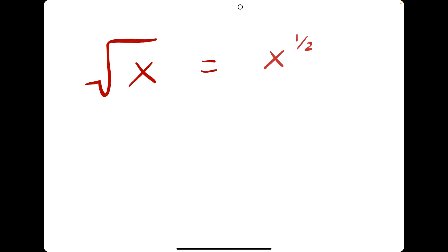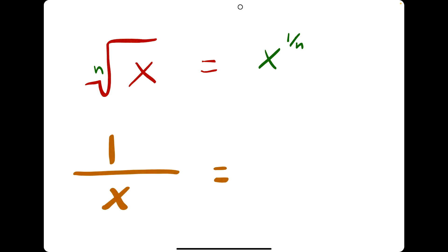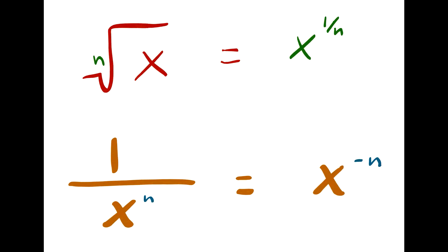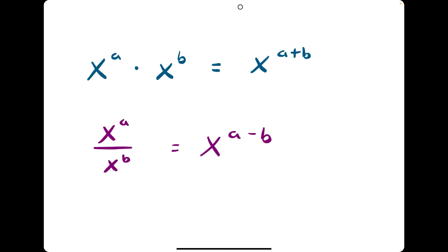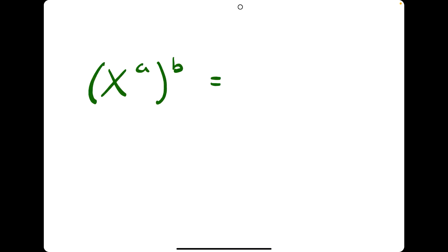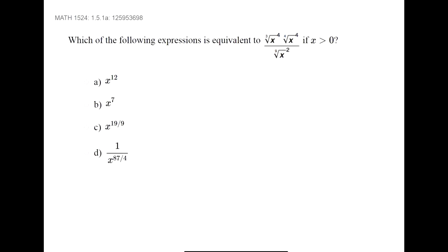The square root of x can be rewritten as x to the 1/2. The cube root of x can be rewritten as x to the 1/3. The nth root of x can be rewritten as x to the 1/n. 1 over x is x to the negative 1. If we have 1 over x squared, we can rewrite that as x to the negative 2. This rule applies to all 1 over x to the n — we can always rewrite it as x to the negative n. Also, x to the a times x to the b equals x to the a plus b; x to the a divided by x to the b equals x to the a minus b; and x to the a raised to the b means we multiply the exponents together.